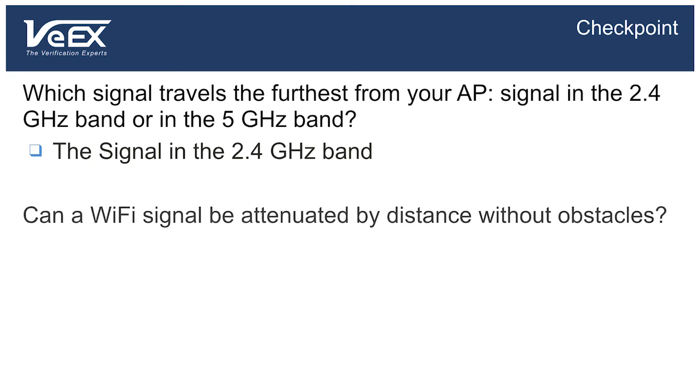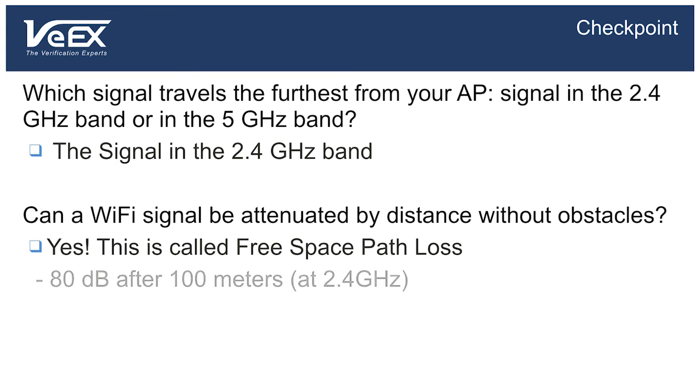Can a Wi-Fi signal be attenuated just by traveling a long distance without any obstacles? Yes. This is called free space path loss. Even with direct line of sight to your access point, you'll eventually get a signal level too low to be useful because of error attenuation. The formula for calculating that loss is a little beyond the scope of this video, but you should know that the 2.4 GHz signal will lose roughly 80 dB in power after 100 meters, while the 5 GHz signal will lose roughly 86 dB.